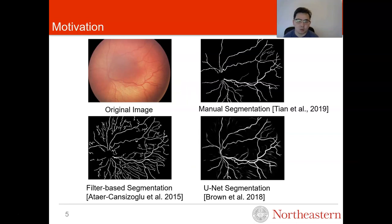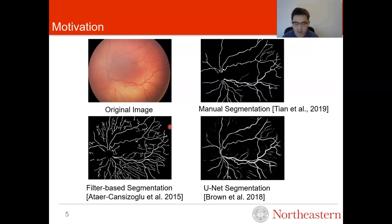The quality of segmentation plays an important role. Our original image is in the upper left corner, and the corresponding manual segmentation is on the upper right, which can be considered as ground truth. Using manual segmentation we can obtain good results, but the process is not fully automated and manual segmentations are much more expensive. A filter-based method can automatically generate segmentations, however compared to manual segmentations it has more noise. Recent work shows that with deep learning techniques, U-Net segmentation contains less noise and is very similar to manual segmentation.